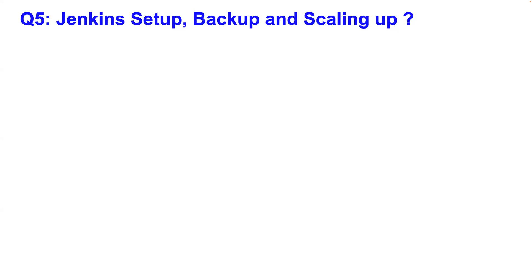Once a new EC2 instance is spun up, Jenkins uses SSH to interact with the newly created node. For backup, Jenkins stores data in the `.jenkins` folder — simply back up that folder periodically using cron jobs and that covers your Jenkins backups. Those are the top five CI/CD interview questions.